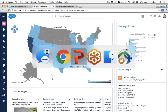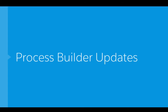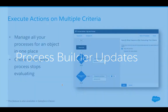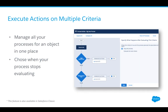Process Builder is our favorite automation tool — it has changed the way admins can automate their business in Salesforce with clicks, not code, and continues to evolve with every release. In Summer 16, the big update is the ability to execute actions on multiple criteria. You can now designate certain criteria trees to continue evaluating down to the next criteria, allowing admins to consolidate multiple processes for a single object into one.